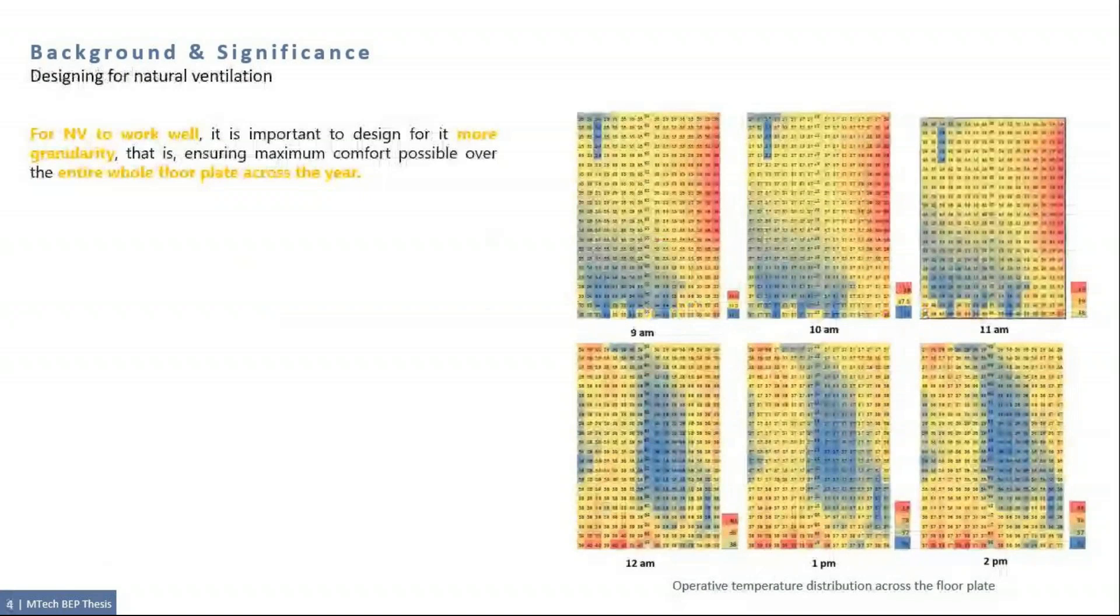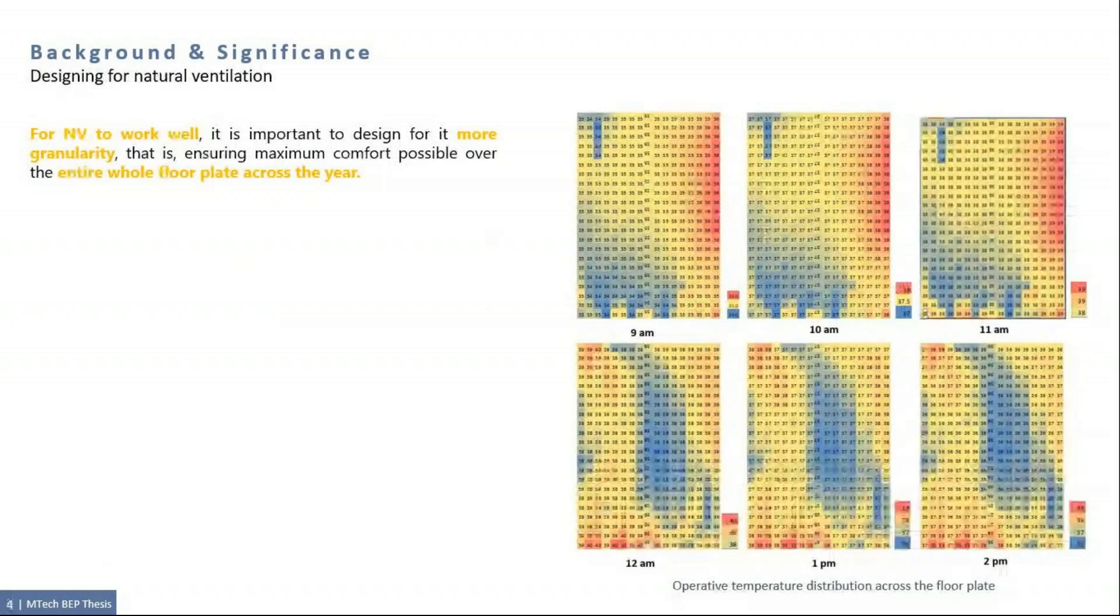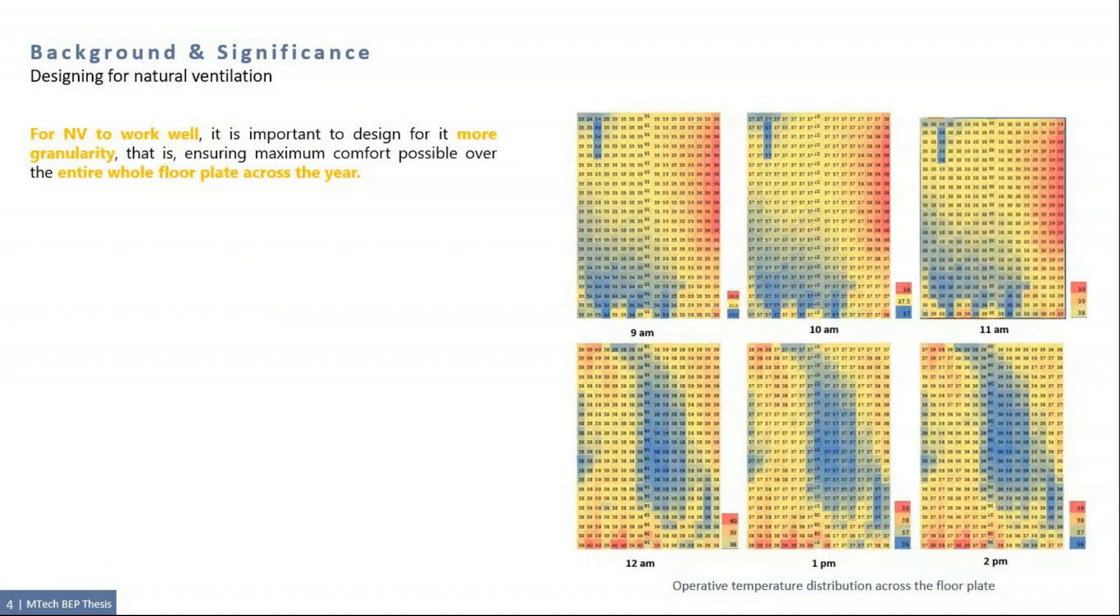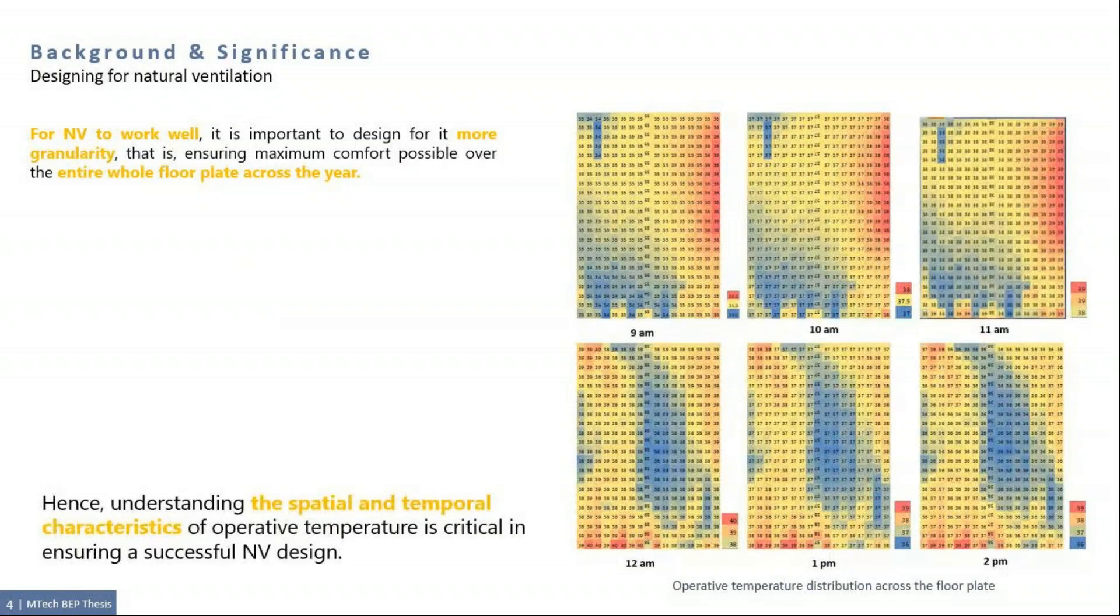For natural ventilation to work well, it is important to design in more granularity, that is ensuring maximum comfort possible over the entire floor plate across the year. This is because even if one part of the floor plate is not comfortable enough at any given point, it will quickly be turned into an air conditioned space that defeats the purpose.